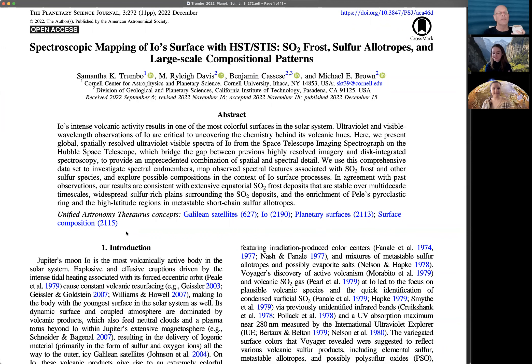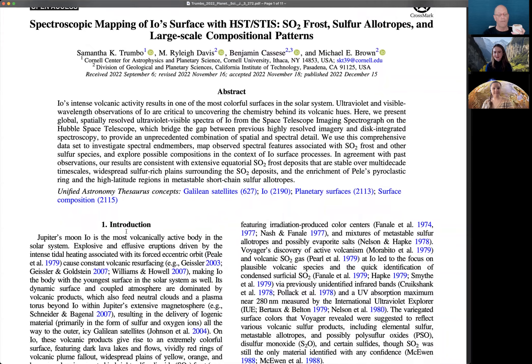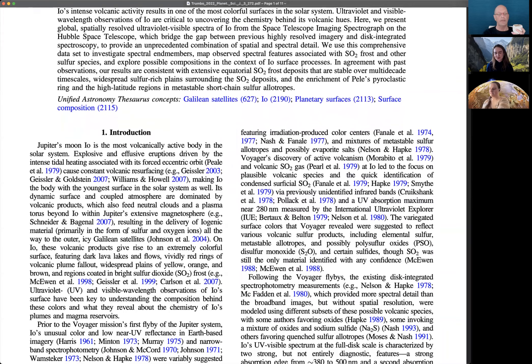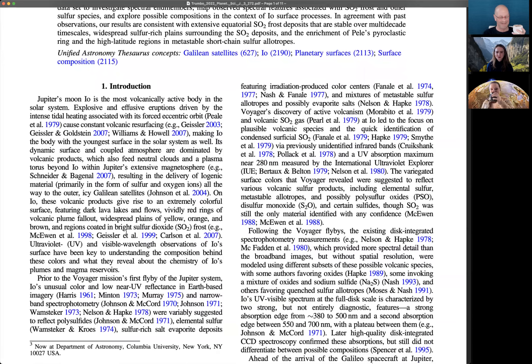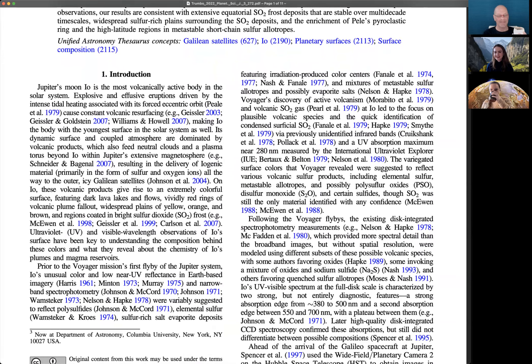Samantha and Riley, take us away. All right, thank you. So first, I want to say thanks to our other co-authors, Benjamin Cassese, he's a grad student now at Columbia, and Mike Brown, who's a professor at Caltech. So basically the goal of this study was to use Hubble Space Telescope and the STIS spectrometer to get global spatially resolved spectra of the surface of Io from the UV through the visible wavelengths, all the way from 200 nanometers to 1000 nanometers.